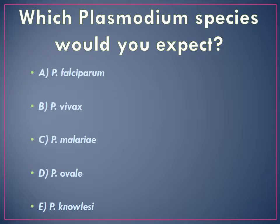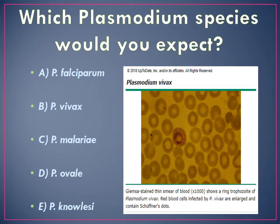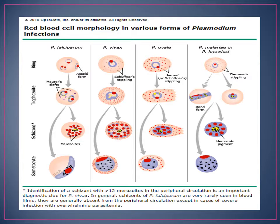So based on the appearance of the structure and the red blood cell morphology of the ring trophozoite, what Plasmodium species would you expect? Would it be A, falciparum; B, vivax; C, malariae; D, ovale; or E, knowlesi? Yes, we know that the Plasmodium species is vivax because it contains Schaffner dots. Here is an image obtained from UpToDate which features the red blood cell morphology in various forms of Plasmodium infections. This is a good chart to have for future reference.